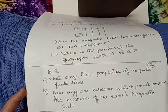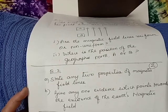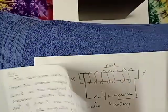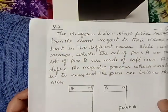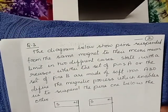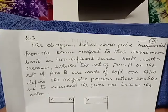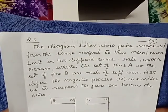Question number 3: The diagram below shows pins suspended from the same magnet to their maximum limit in two different cases. State with reason whether the set of pins A or the set of pins B are made of soft iron.